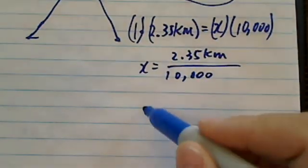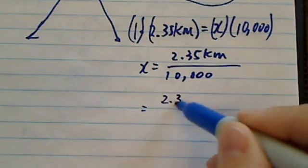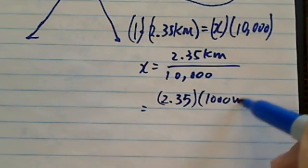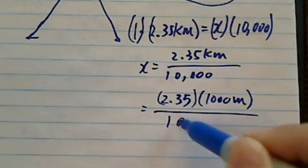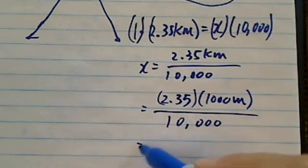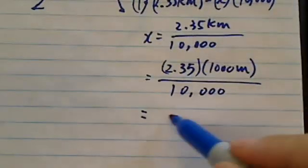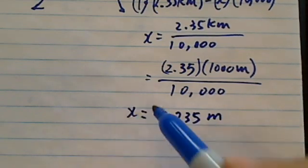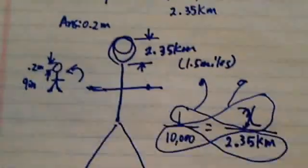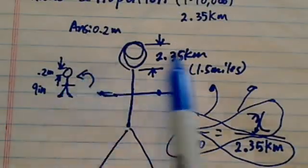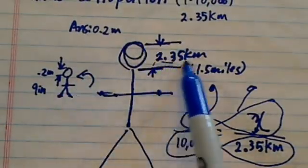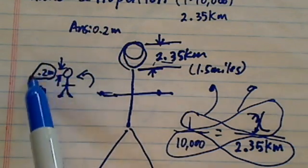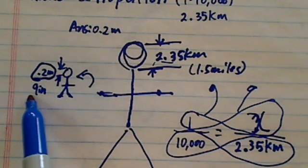Okay, since a kilometer is really 1,000 meters divided by 10,000, and the ratio, then we have 0.235 meters. So in the little picture earlier I was showing over here, this chunk that represents 2.35 km, when we shrink it down we have 0.2 meters, which is roughly 9 inches.